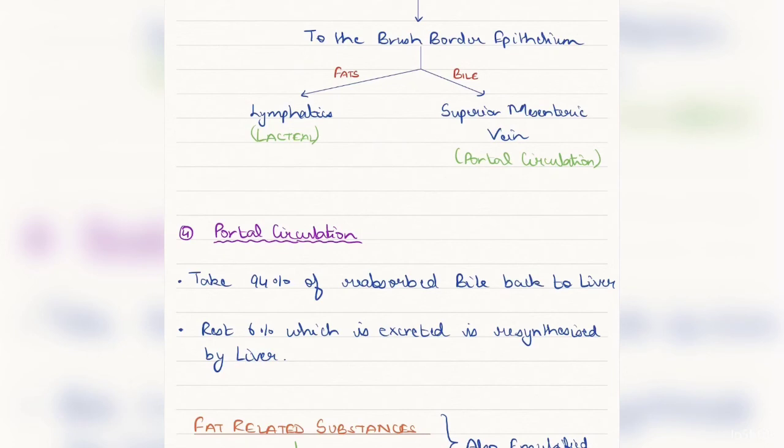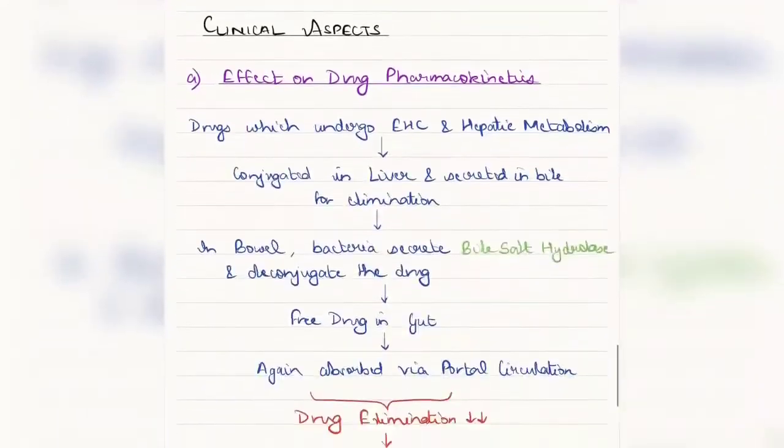This finishes the physiology of bile circulation, but there are also certain other substances in which this same mechanism acts for absorption. These are fat-related substances like vitamins A, D, E, and K. These are called fat-soluble vitamins, and without bile, they will not be able to get absorbed and thus excreted as such, and we may have deficiency of these vitamins.